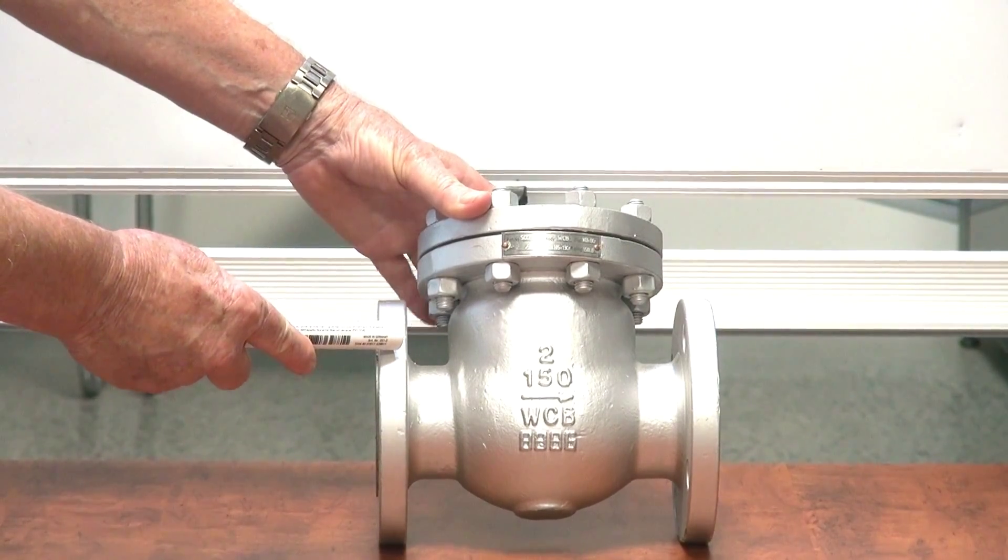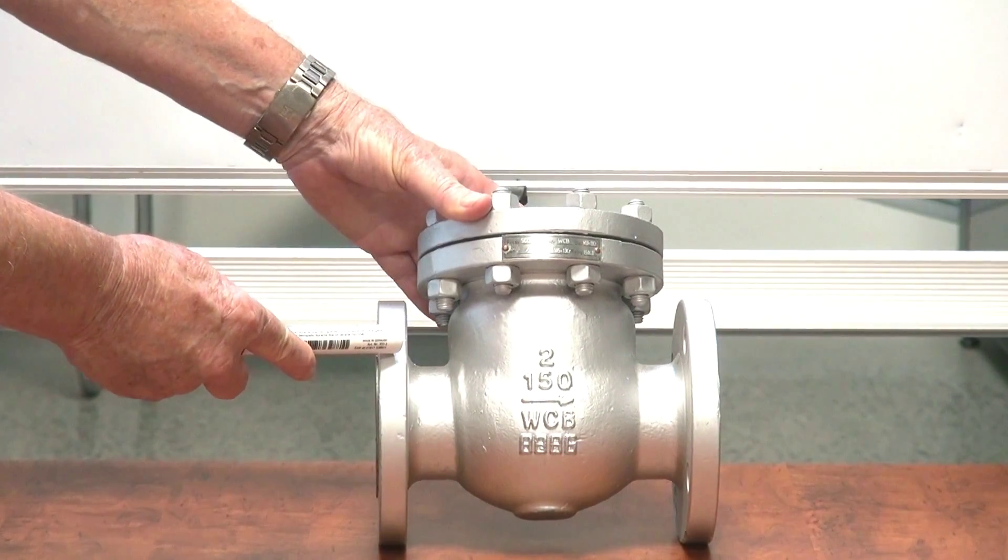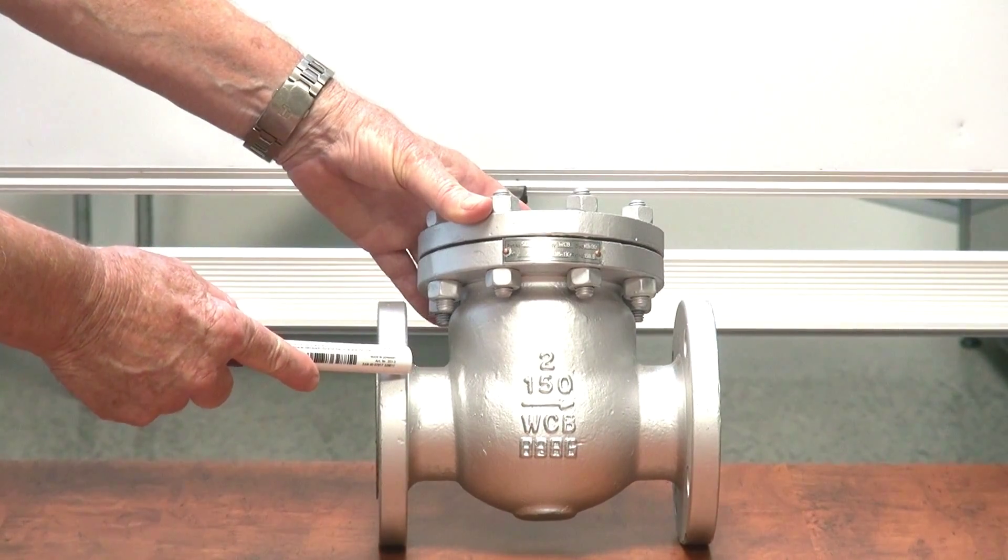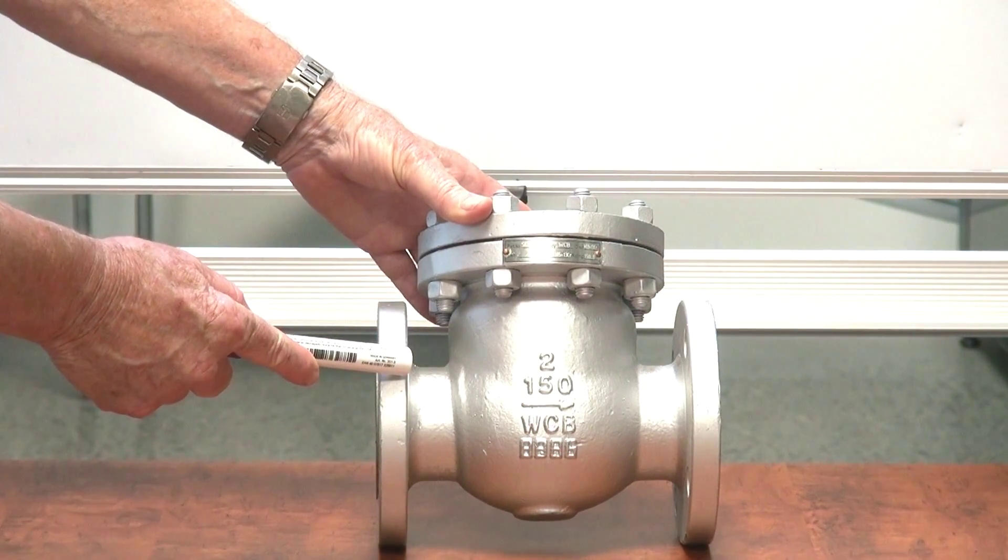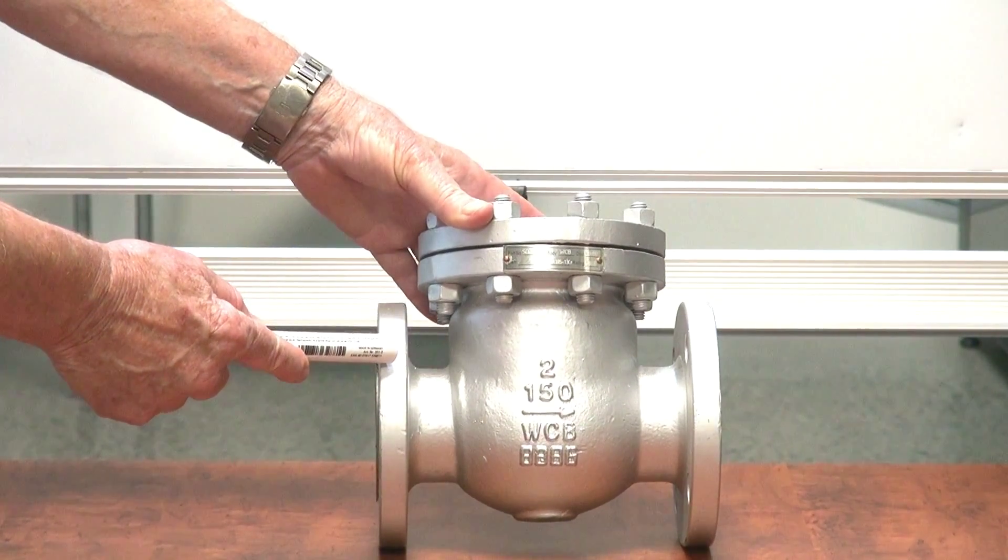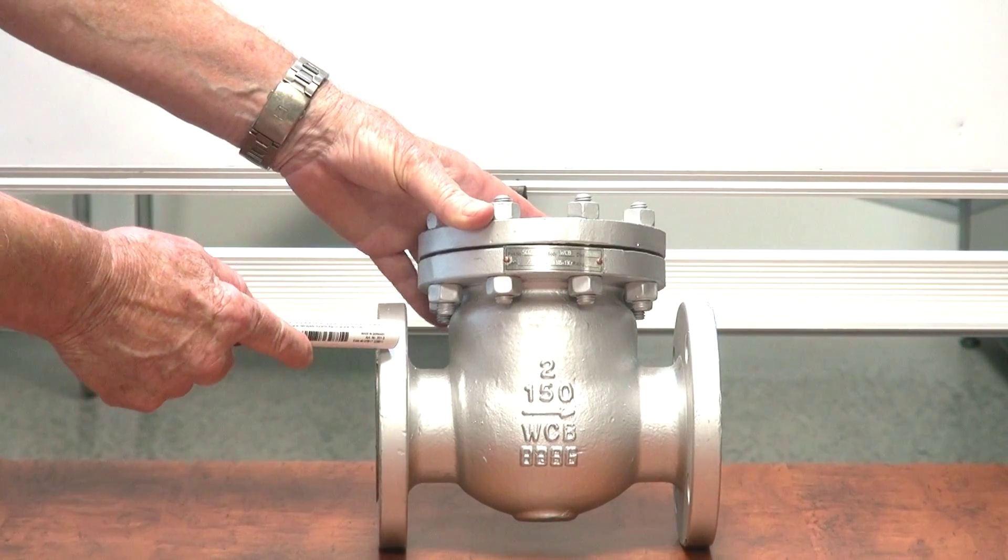It's a cast steel swing check valve. These ones come in flanged ANSI from 50 millimeter up to 300 millimeter. They're designed for petrochemical and steam and water or fluid applications.